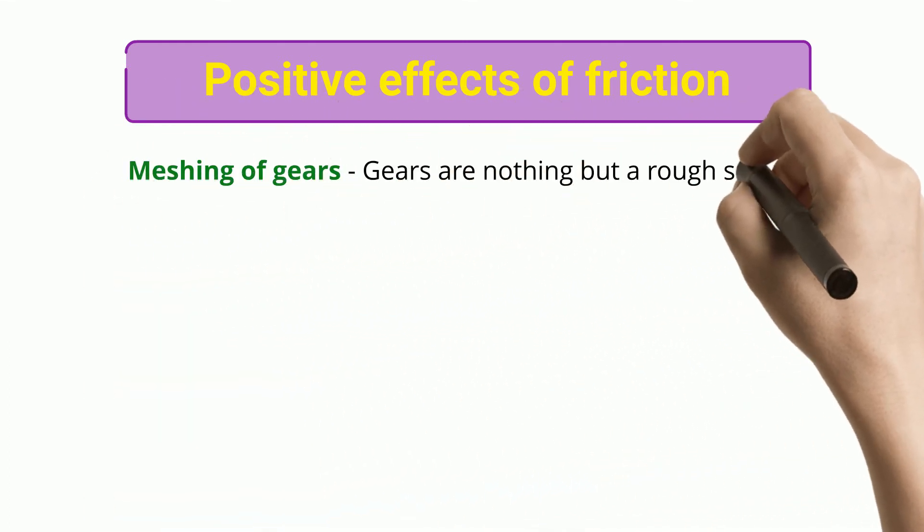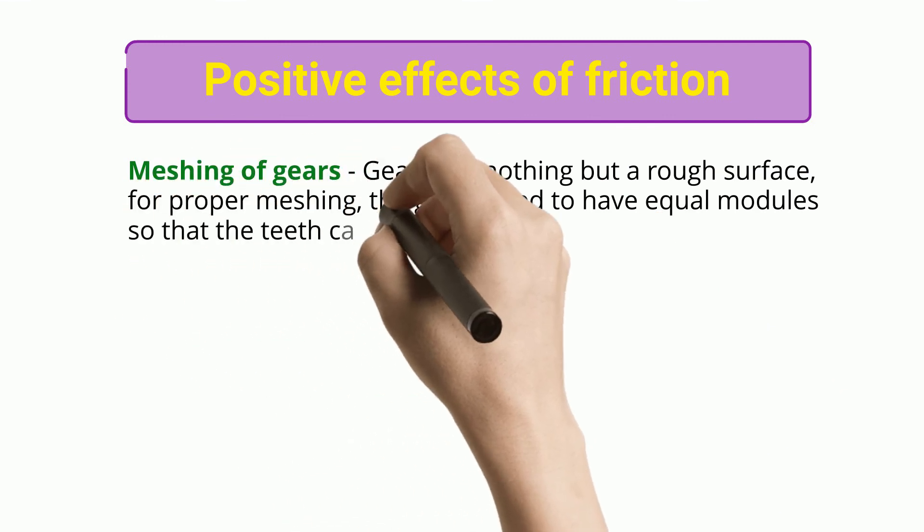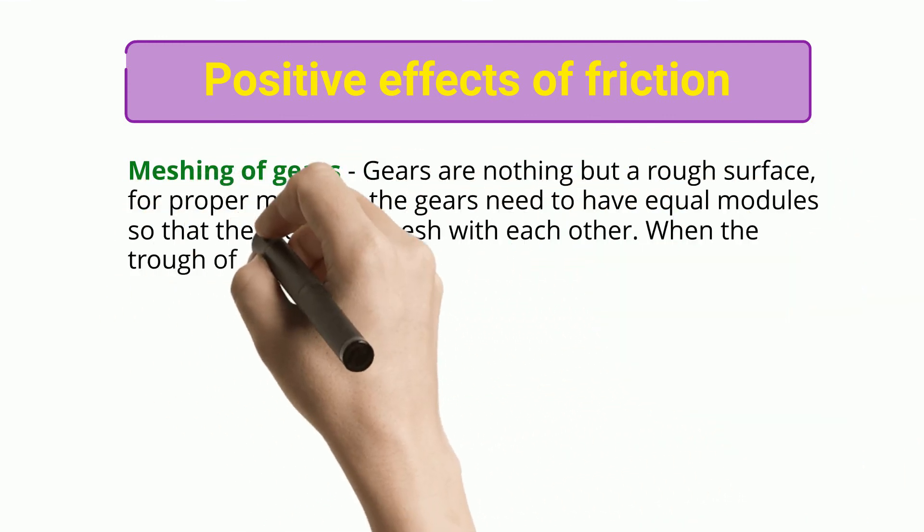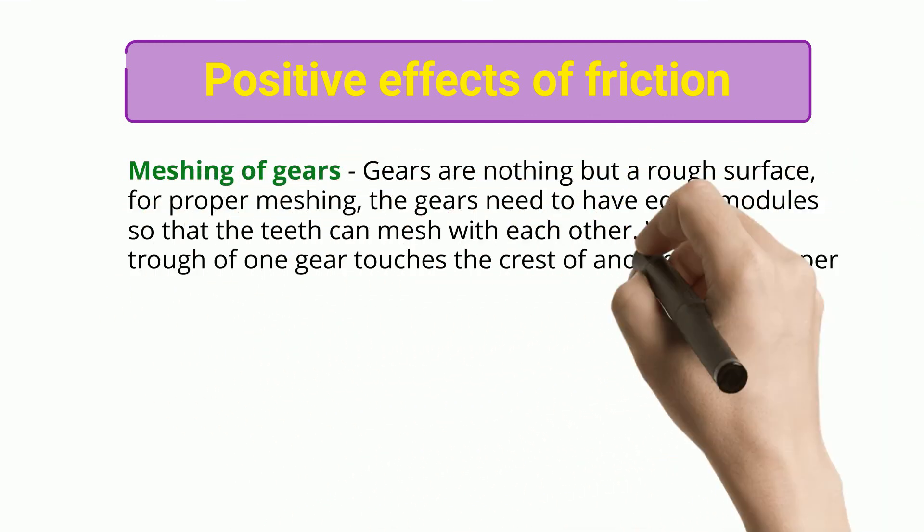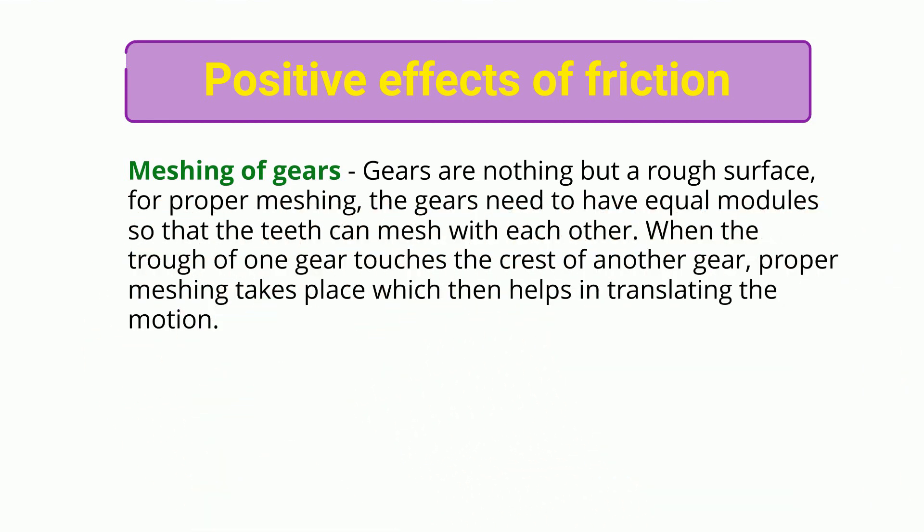Meshing of gears: Gears are nothing but rough surfaces. For proper meshing, the gears need to have equal modules so that the teeth can mesh with each other. When the trough of one gear touches the crest of another gear, proper meshing takes place, which then helps in translating the motion.